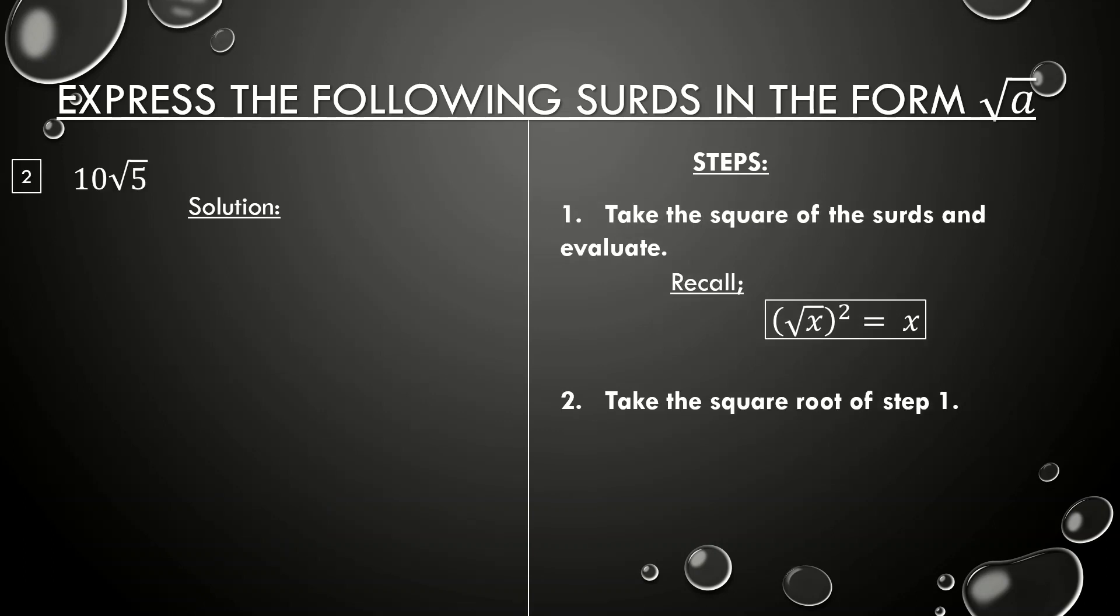Good, now let's look at the next question. If you don't mind you can try it. We are still using the same steps. 10√5. The first step we do is to take the square of everything here, becomes (10√5)². Now as you all know in maths the square affects everything in the brackets, so we now have 10² times (√5)².